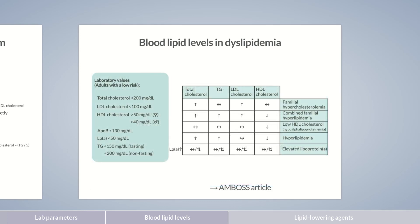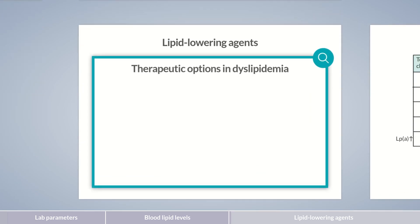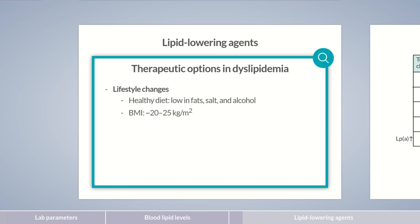What needs to be done if blood lipid levels are elevated? Even if it's not always the most popular measure, the first step in an attempt to reduce lipid levels is changing your lifestyle. Depending on your previous lifestyle, a reduction in LDL levels of up to 40% can be achieved. This includes a healthy diet that is low in saturated and trans fats, salt, and alcohol. Body weight should be reduced to a BMI of approximately 20 to 25 kg per square meter, and physical activity should be incorporated wherever possible into the daily routine. Smoking should be stopped, or at least reduced.